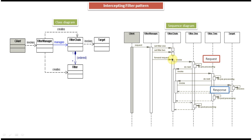Once the request reaches the filter chain, the filter chain executes the filters which are in the filter chain. The filter chain maintains the collection of filters, so it gets each filter and invokes them one by one. In this case there are two filters set in the filter chain. So first it invokes filter one, and filter one does the preprocessing of the request.